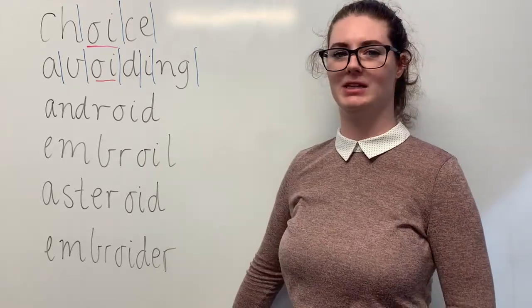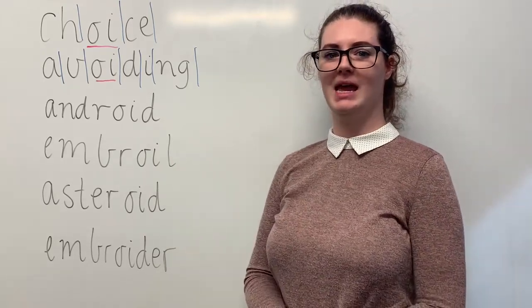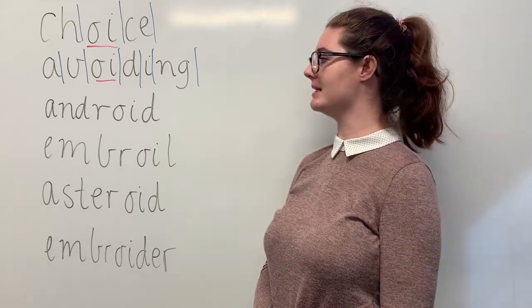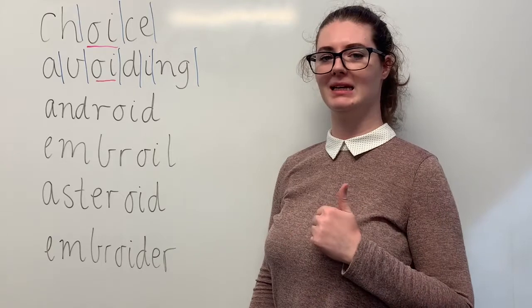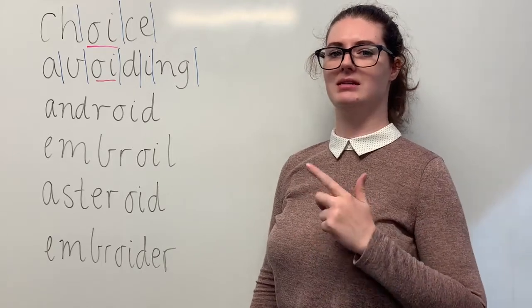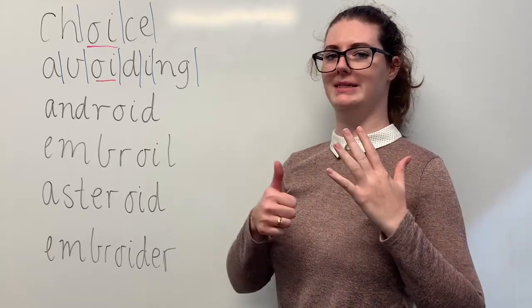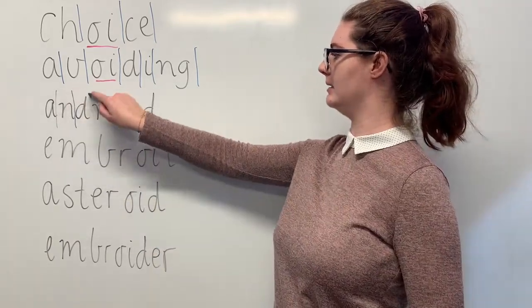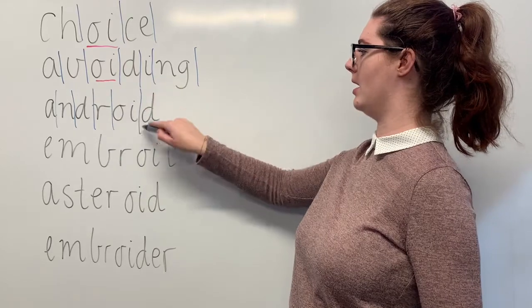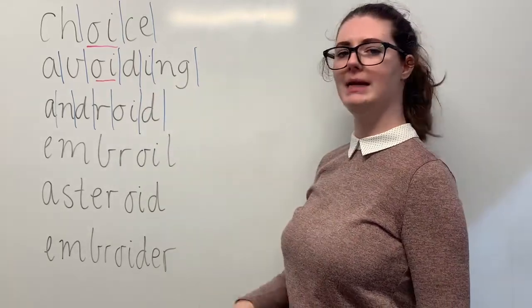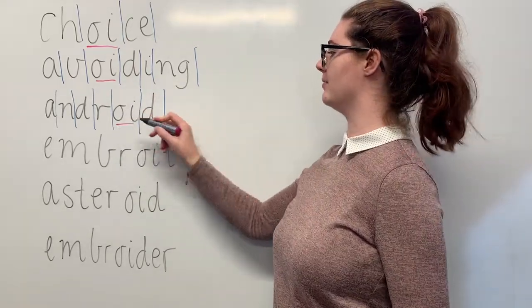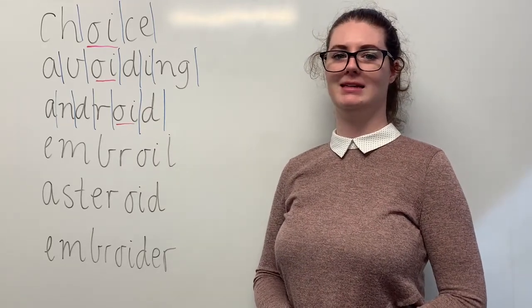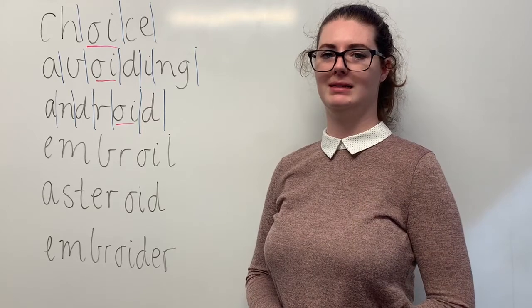Our next word is android. Say android. C3PO in Star Wars is an android. The sounds in android are, together, a, n, d, r, oi, d. The letters in android are a, n, d, r, oi, d. The part we need to remember is the oi digraph making the oi sound. Can you teach it to me? Android: a, n, d, r, o, i, d.